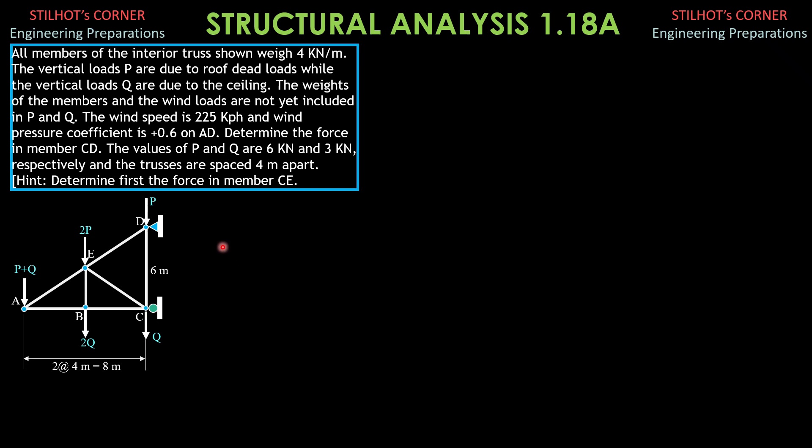First, let's have the pressure, wind pressure, or due to heat load, which is 0.0473 velocity squared, where velocity is in kilometers per hour, and this gives us pressure in Pascals. So 0.0473 times 225 quantity squared, that's 2394.6 Pascals or 2.3946 kilopascals.